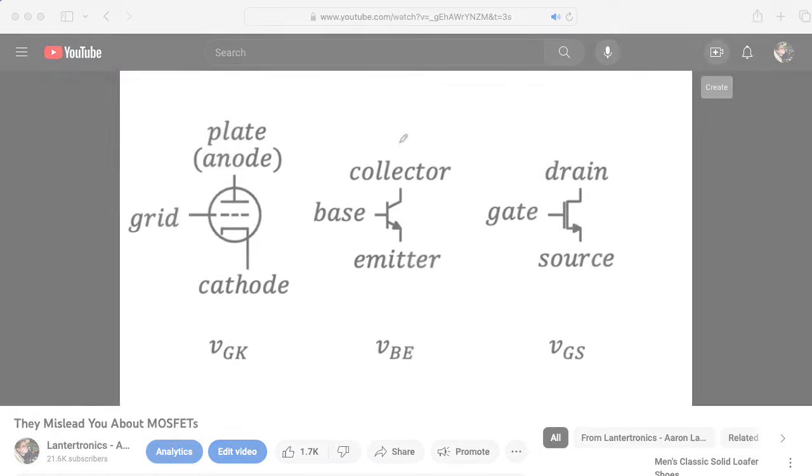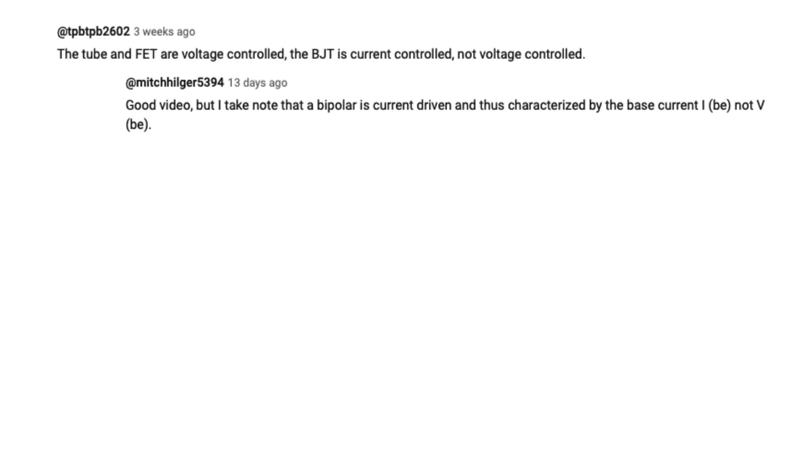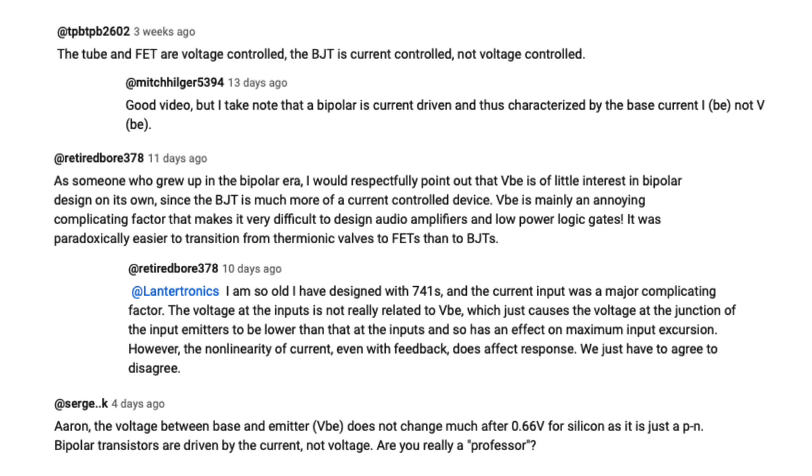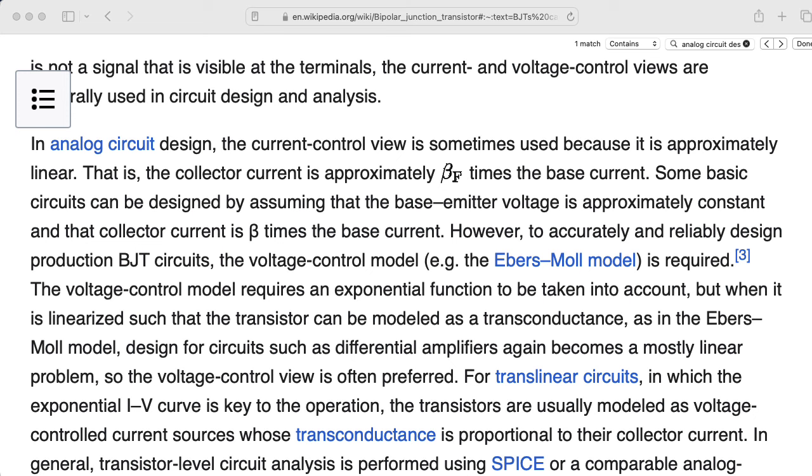I should have seen it coming. I got a ton of comments from people saying, well, actually, BJTs are current-controlled current sources, not voltage-controlled. And technically speaking, it's not incorrect to think of a BJT as a current-controlled current source. It's not helpful. It's much more fundamentally a voltage-controlled device.